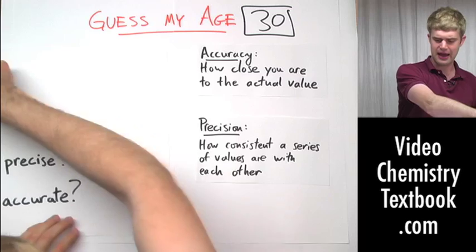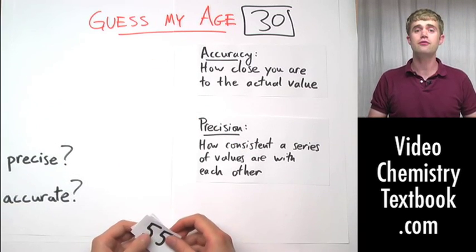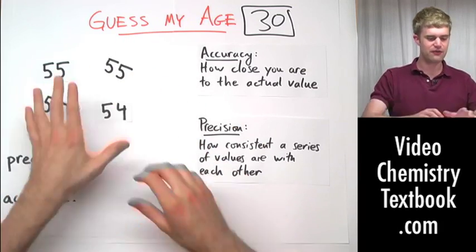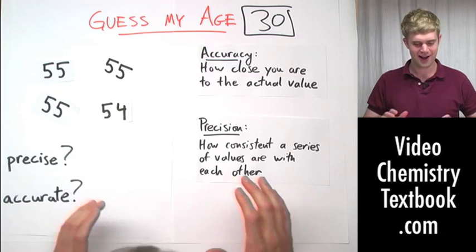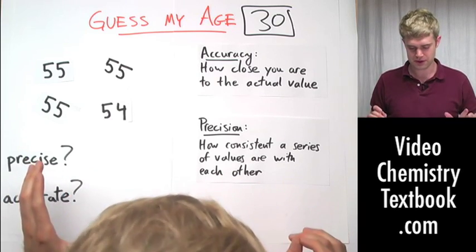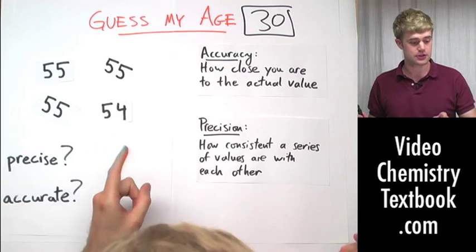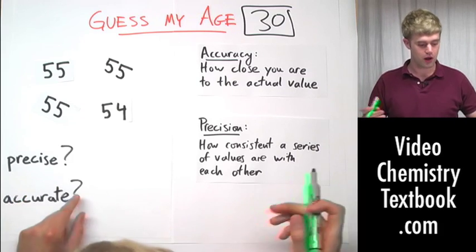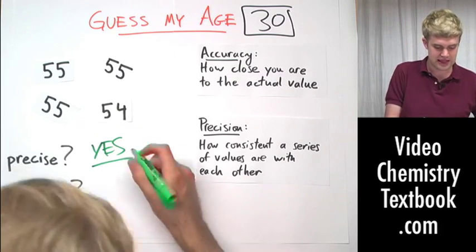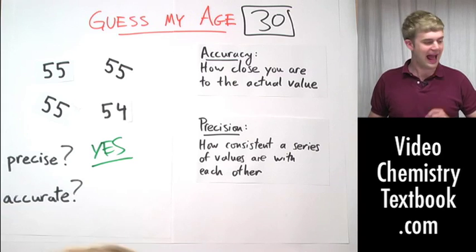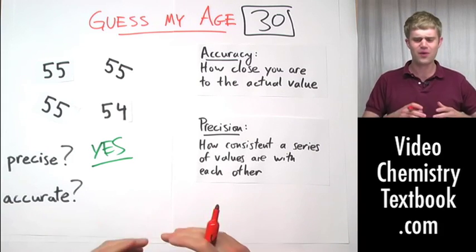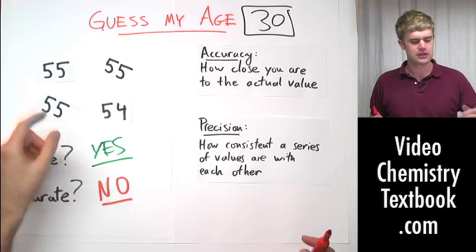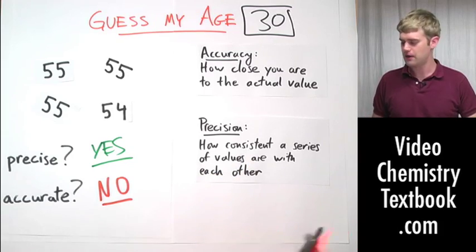Let's say that we get another four people to play this game, and they give the following answers: 55, 55, 55, and 54 are the four guesses for the age. Now, these are way off in terms of accuracy, but the question is, are they precise? Well, they're very consistent with each other. Three 55s and one 54. So precise? I'm definitely going to say yes. But accuracy? Are they accurate? No. They're nowhere near the actual age, which is 30. So we say no. So things can be precise if they're close together and consistent, but accurate? Not at all.